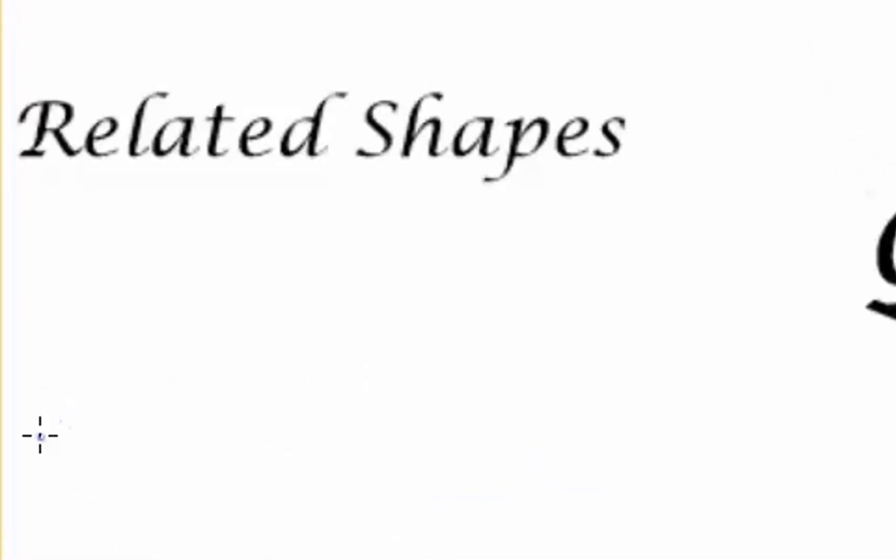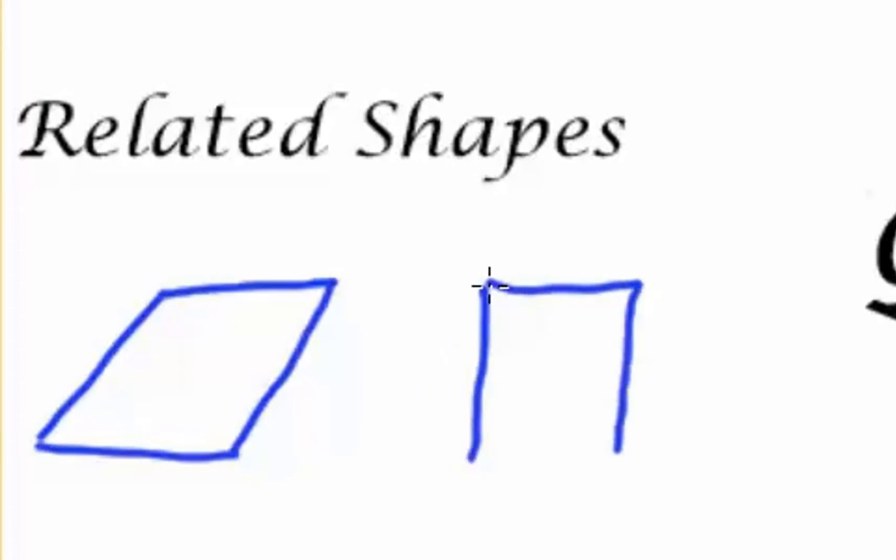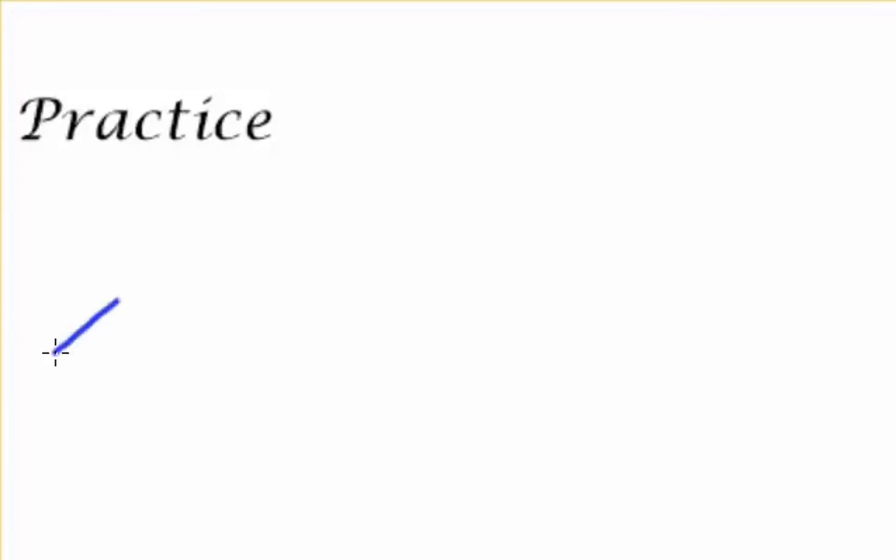Now with area, many of our related quadrilaterals have similar characteristics. I could take a parallelogram and a rectangle with similar dimensions and ultimately realize that they could have the same area. Regardless of how the shape might be slanted or drawn, with the similar dimensions, the area will be the same. But let's take a look at some practice.